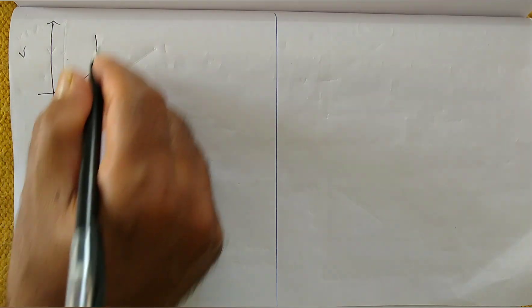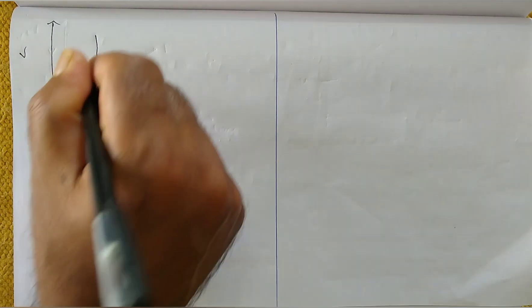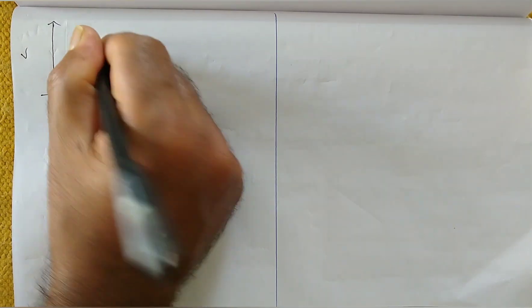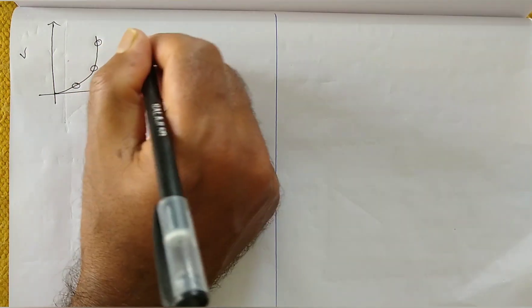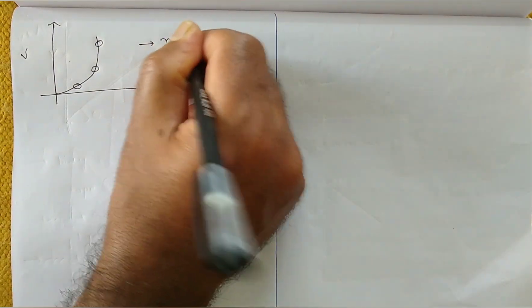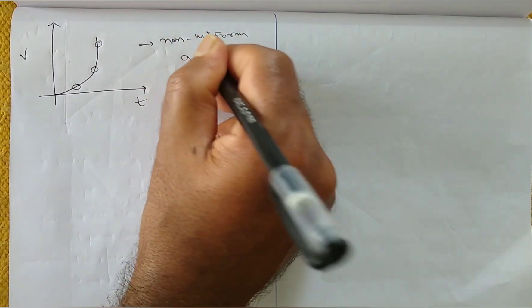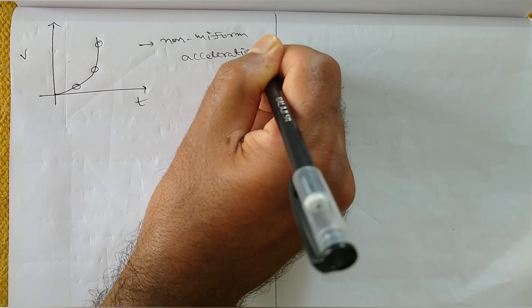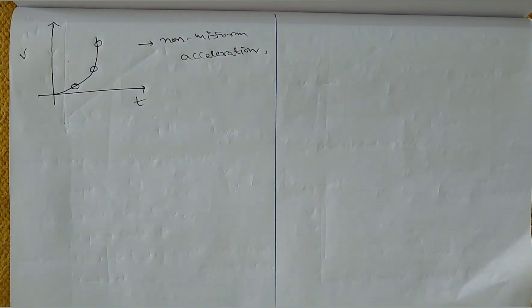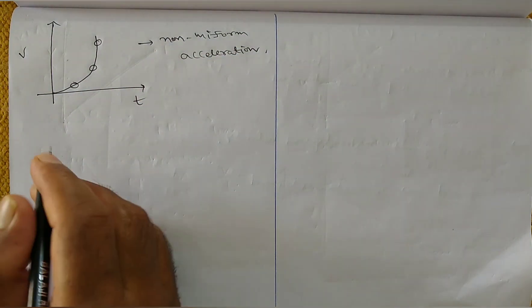Now consider a curved V-T graph. At different points on the curve, the slope is different — the slope is not constant. This is the example of non-uniform acceleration.